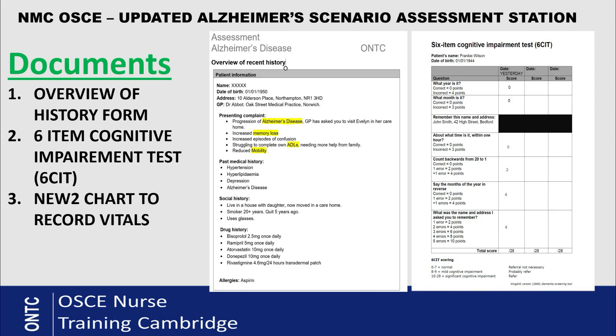Additionally, you will get the Six-Item Cognitive Impairment Test, which is the tool we use to assess for memory loss and confusion in patients. You will also get the NEWS chart because you still need to take and record the patient's vitals and do an A-to-E assessment. Of course, you still need to carry out the holistic assessment of patient nursing needs: physical, psychosocial, spiritual, and sexual.